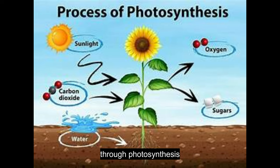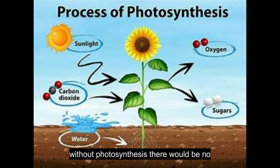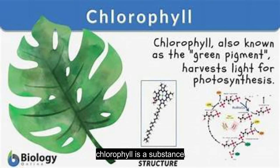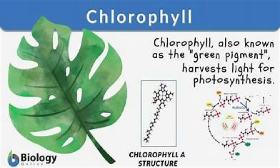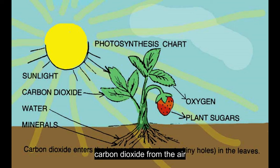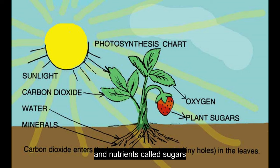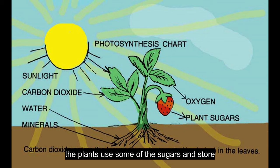Plants make their food through photosynthesis. Photosynthesis is the process in which green plants use sunlight. Without photosynthesis there would be no green plants, and without green plants there would be no animals or humans. Photosynthesis requires sunlight, chlorophyll, water and carbon dioxide gas. Chlorophyll is a substance in all green plants, especially in the leaves. Plants take in water from the soil and carbon dioxide from the air. Photosynthesis starts when chlorophyll absorbs energy from sunlight. Green plants use this light energy to change water and carbon dioxide into oxygen and nutrients called sugars. The plants use some of the sugars and store the rest. The oxygen is released into the air.